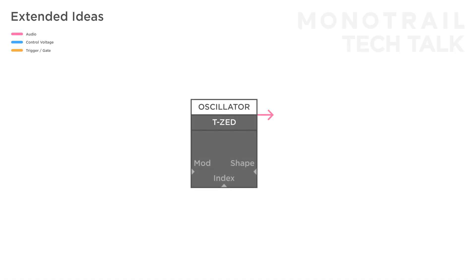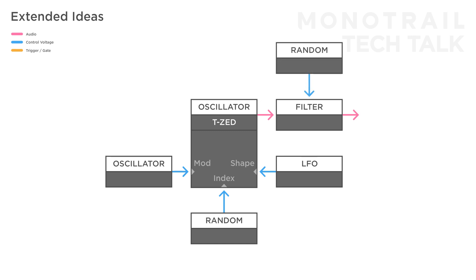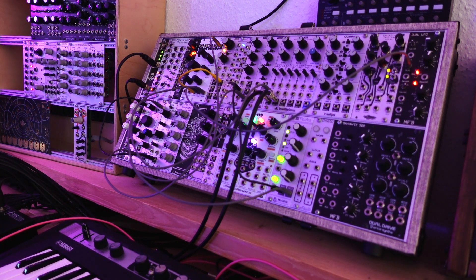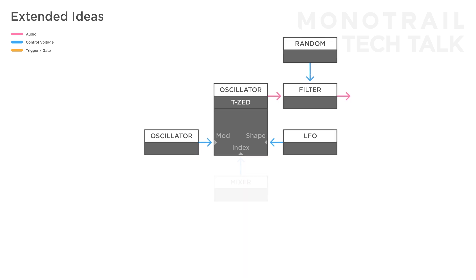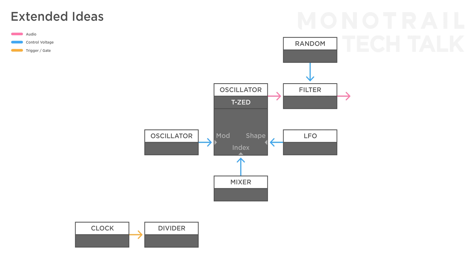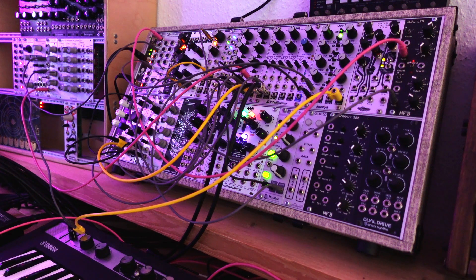Let's go back to a drone setup, sending the TZ through a filter again. To create slowly changing sounds over time, add an oscillator to the mod input, a slow random voltage to the index, an LFO to the shape input and for extra taste another slow random voltage to the filter. You can alter this patch and add interesting tempo-synced modulation again by replacing the random voltage with a mixer, using a clock and clock divider to trigger two different envelopes, and mixing them together with a random voltage to use on the index as well as the filter.